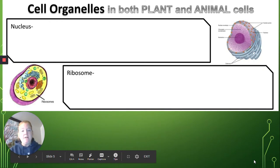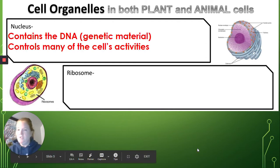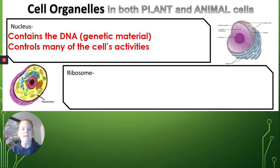There are some organelles that are found in both plant and in animal cells. First one, which I just mentioned, the nucleus. The nucleus contains the DNA, or genetic material. It controls many of the cell's activities, and has often been referred to as the brain of the cell.